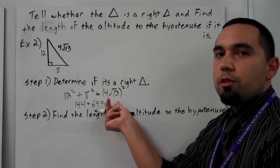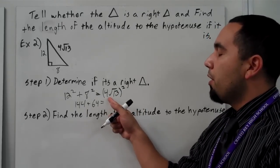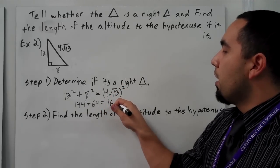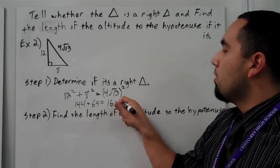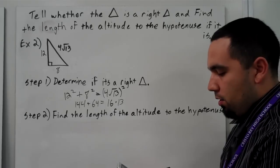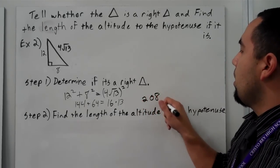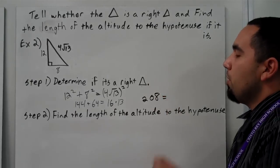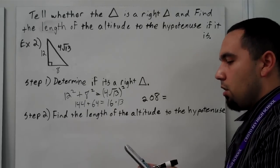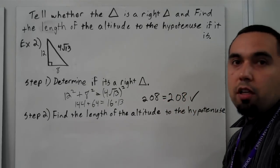Let's work out the left side first. 12 squared is 144, and 8 squared is 64. On the right side, when you square 4 root 13, a square undoes a square root, so I'm squaring 4 to get 16, then multiplying by 13. So 144 plus 64 gives me 208, and 16 times 13 also gives 208. So yes, I do have a right triangle.